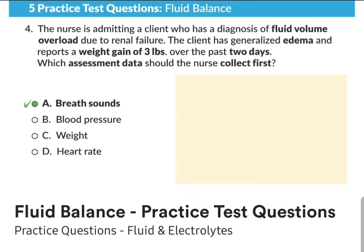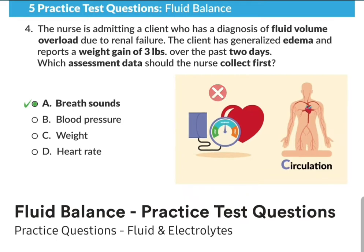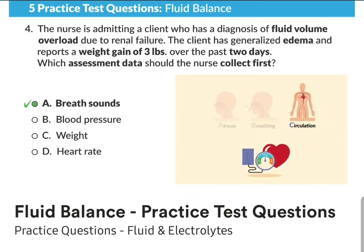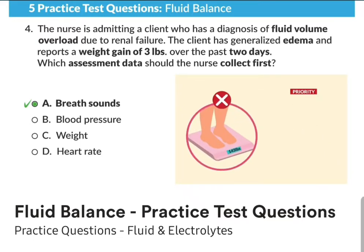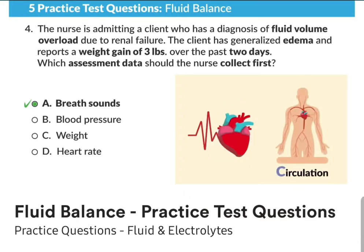Options B, C, and D are all incorrect. Option B, blood pressure, was very close but is a circulation assessment — if there were no options for airway and breathing, this would be the priority. Option C, weight, is not the priority over breath sounds, though daily weights are very important to assess because weight gain equals water gain. Option D, heart rate, is also a circulatory assessment and doesn't take priority over breathing.